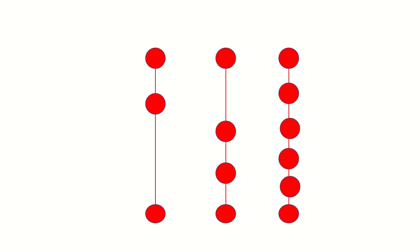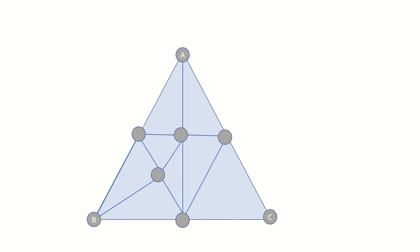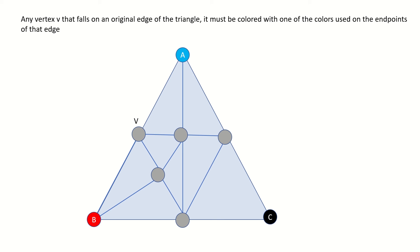Just one more concept to go before we get to Sperner's Lemma: Sperner colorings. Say we have a triangulation of a simplex, such as the triangulation of a triangle ABC like this. Then a Sperner coloring is one in which we give a different color to each original vertex of our triangle, and then color any vertices of our smaller triangles that happen to fall on an edge of our original triangle according to a special rule. A vertex that falls on the original triangle edge AB must be colored with either the color of vertex A or the color of vertex B. In other words, if one of the vertices of our smaller triangles falls on an edge of our original triangle, it must be colored with one of the colors used on the endpoints of that edge. Now color the smaller triangle's vertices that lie within the original triangle however you'd like. That is all there is to a Sperner coloring.